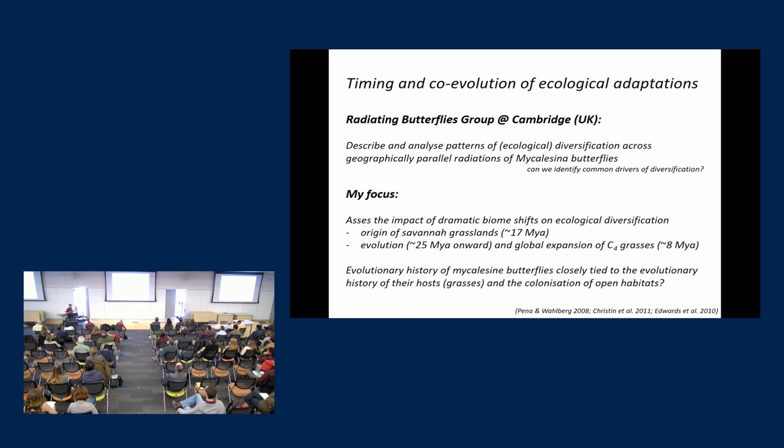We were several people in our group in Cambridge, and we were kind of all focusing on different questions. One was looking into chemical communication, one in visual communication, and trying to find commonalities between these different parallel radiations. And myself, I got interested in the interaction with their host plants because they are grass feeders, and there has been these very dramatic biome shifts in recent history. One is the origin of savannah grasslands roughly 70 million years ago. And the evolution and later the global expansion of these C4 grasses. And you can imagine that if you are a grass feeder and there is this big transition, evolutionary transition in your host plants, that that might affect your evolution yourself, your own evolutionary processes.